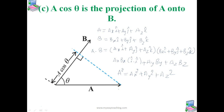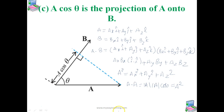We already know that a·a can be written as the magnitude of a times the magnitude of a times cos0°. Since cos0° equals 1, a·a equals a². Also, if a and b are perpendicular, then a·b equals 0, since the angle between them is 90° and cos90° equals 0.